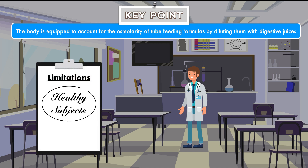One limitation of these studies is that they included healthy subjects only. As a result, they don't provide insight into the body's ability to dilute when the gastrointestinal tract is impaired. A bowel resection or loss of gastric secretions might make it more difficult for this dilution to take place. In that case, a formula that begins with a lower osmolarity may be better tolerated, though I'm not aware of any studies that have tested it.